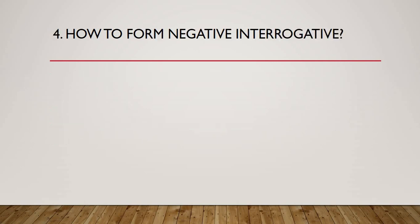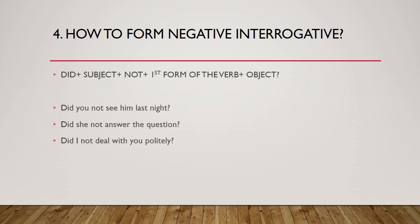Number four: how to form negative interrogative. Formula: did plus subject plus not plus first form of the verb plus object. Did you not see him last night — kya aap raat usse nahi mile the? Did she not answer the question — kya usne sawaal ka jawab nahi diya tha? Did I not deal with you politely — kya maine tameez ke daayare mein rehte hue aapse bartao nahi kiya tha?